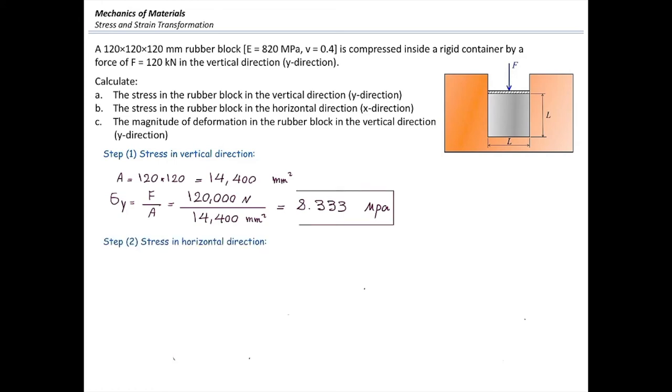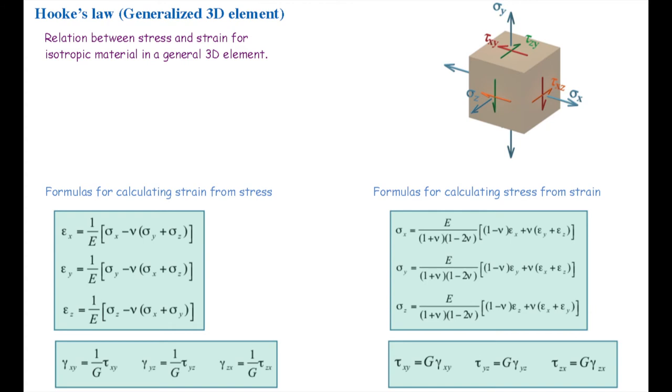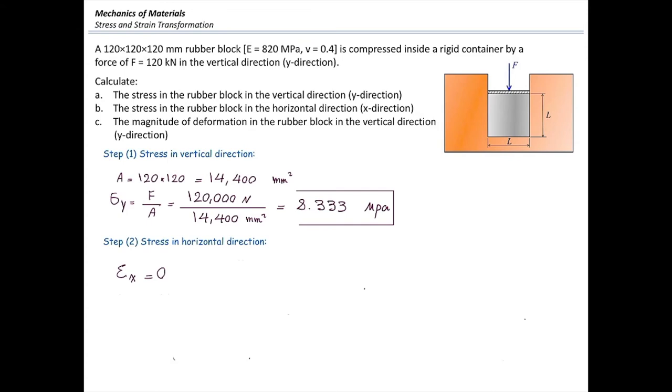Now, we are going to start with the generalized Hooke's law in order to determine how much our stress is. For deriving our own equation, I'm going to use the left-hand side equations on this page, which are giving us strain in terms of stress. So I'm going to say that epsilon x is equal to 0, and epsilon z is equal to 0. Let's write down the epsilon x equation. Because epsilon x is 0, that means that sigma x is equal to nu multiplied by sigma y plus sigma z.